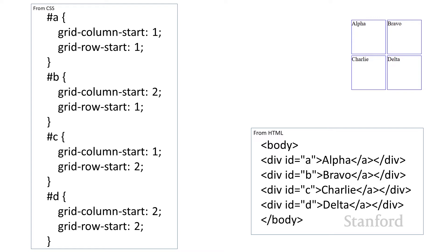I'm putting the element with ID A at column 1, row 1; element B at column 2, row 1; C at column 1, row 2; and D at column 2, row 2. Because this is grid-based layout, this is not limited by what the HTML looks like. If we want to put these in reverse order or wherever we want, we can. You can also stack items on top of each other, but don't do that — you'll see the text jumbled on top of each other.